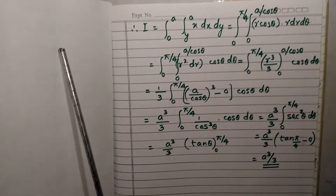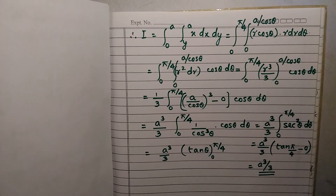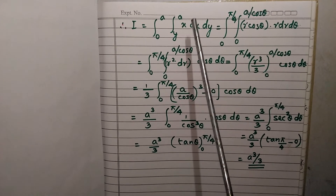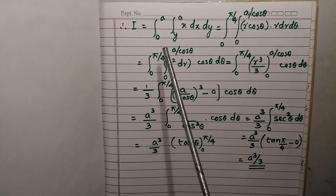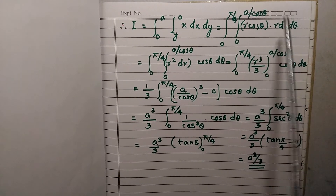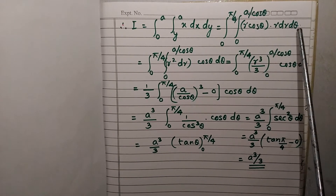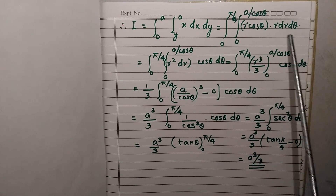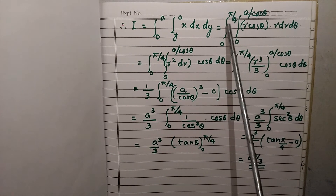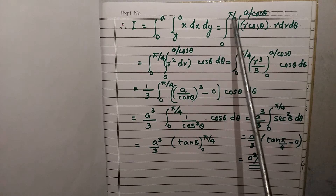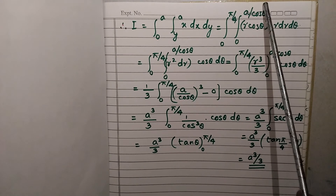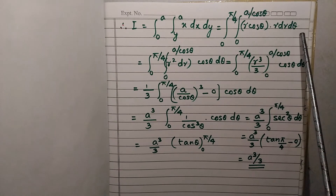Now, to integrate: I equals the original integral from 0 to A, Y to A, of X dx dy, where dx dy is replaced by R dr d theta, and X is replaced by R cos theta. So the converted integral becomes: integral from 0 to pi by 4, integral from 0 to A by cos theta, of R cos theta times R dr d theta.